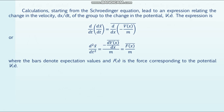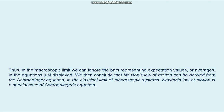Calculations starting from the Schrödinger equation lead to an expression relating the change in velocity d⟨x⟩/dt to the change in potential V(x). The expression involves expectation values, and F(x) is the force corresponding to the potential V(x). In the macroscopic limit we can ignore the bars representing expectation values, and we then conclude that Newton's law of motion can be derived from the Schrödinger equation in the classical limit. Newton's law of motion is a special case of Schrödinger's equation.